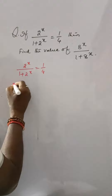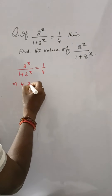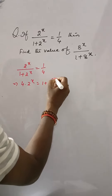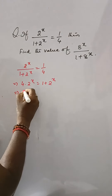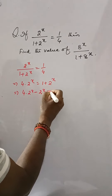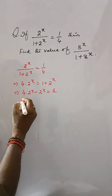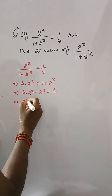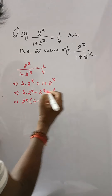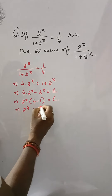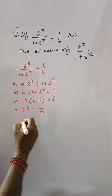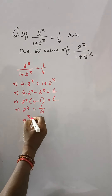By cross multiplication, 4 into 2 to the power x is equal to 1 plus 2 to the power x. Then 4 into 2 to the power x minus 2 to the power x is equal to 1. Taking 2 to the power x common, that means 4 minus 1 is equal to 1. So 2 to the power x is equal to 1 by 3.